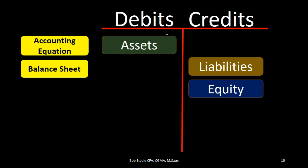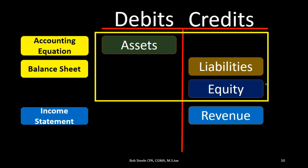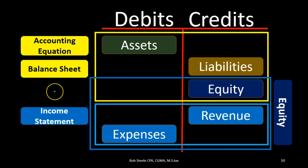Let's recap our cheat sheet. We need to know the accounting equation and balance sheet: assets are debit, liabilities are credit, equity has a net credit balance. The income statement, which is part of equity, includes revenue with a credit balance and expenses with debit balances. Revenue minus expenses equals net income, hopefully contributing to the credit balance of equity — the amount owed to the owner. Once we know normal balances, the next step is understanding how to make these accounts go up and down — which we'll cover next time.